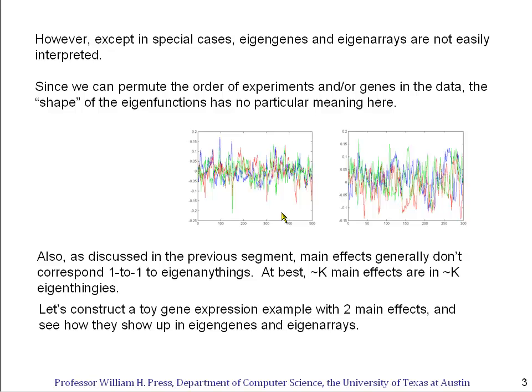Also, as we discussed in the previous segment, the main effects generally don't correspond one-to-one with eigon-anythings. We can hope, at best, that somewhere in the first k eigen-thingies, in this case eigengenes and eigenarrays, are lurking the top k main effects, and in that case this will be a useful dimensional reduction.